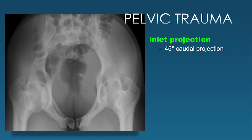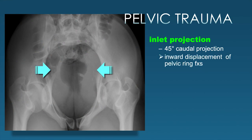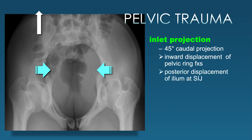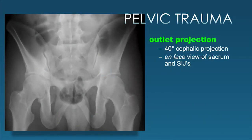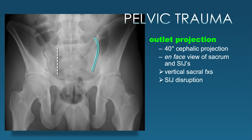The inlet projection is done at roughly a 45 degree caudal projection. You can see inward or medial displacement of pelvic ring fractures, any posterior displacement of the iliac bone relative to the sacrum at the SI joint, and crush fractures and buckling of the anterior sacral wall. We can also see the orientation of pubic rami fractures to suggest whether these are anterior or lateral compression type injuries. The outlet view gives you an unforeshortened view of the sacrum and anterior SI joints, allowing us to look for vertical sacral fractures and vertical displacement of one hemipelvis relative to the other.